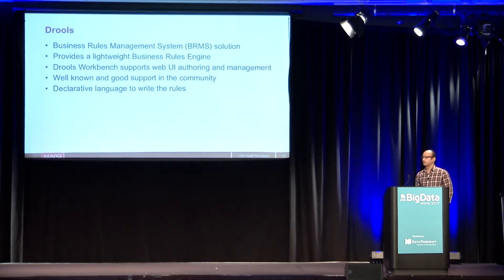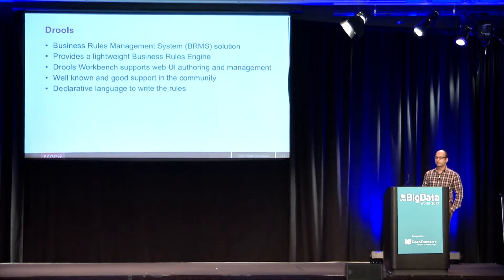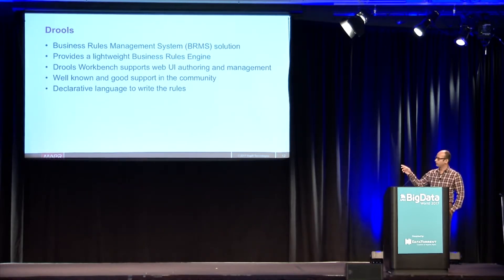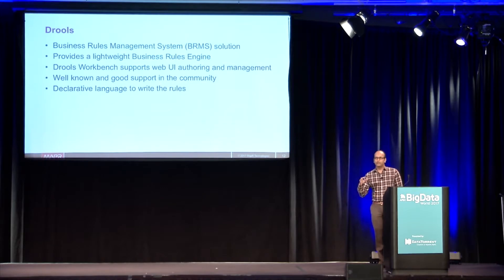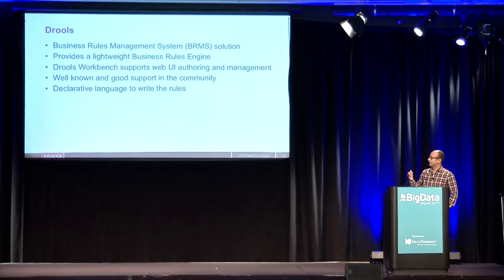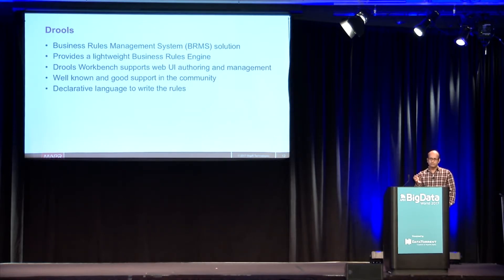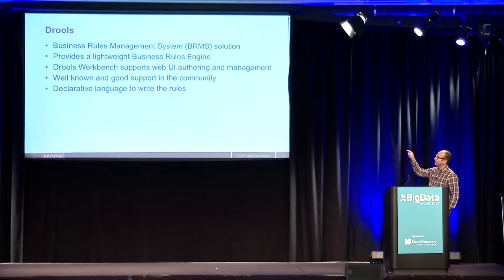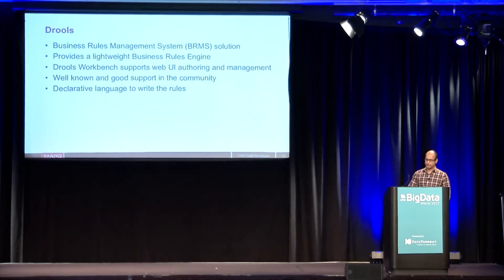The rules component is a Business Rules Management System — BRMS. This is a well-known rule engine available in open source with good community support. It provides a workbench, which is a web UI and authoring tool. You write rules in a declarative language called DRL — Drools Rule Language. Once set up, the BRMS lets you modify rules on the fly, for example by editing them in GitHub or using the workbench UI to add or modify existing rules.